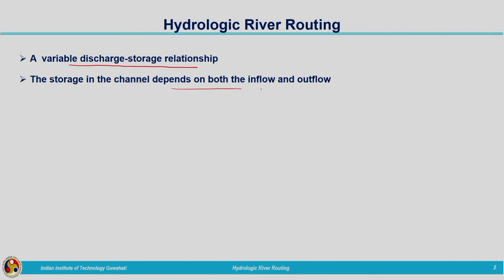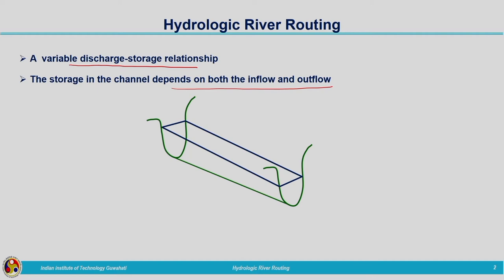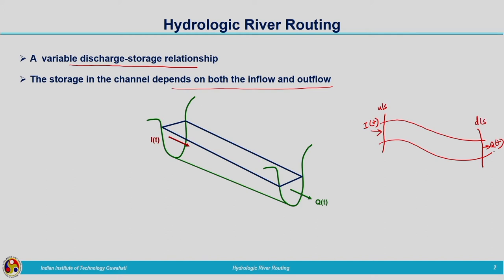The storage in the case of channels depends on both inflow and outflow. On the other hand, in the case of reservoirs the storage was a function of outflow only — there was no relationship with respect to inflow. In the case of channels or streams, storage is a function of both inflow and outflow. We are having the inflow at the upstream end and the outflow at the downstream end. The stream flow represented by the inflow hydrograph, denoted i(t), is known to us, and we need to find out the outflow hydrograph at the downstream end.